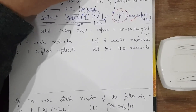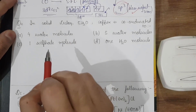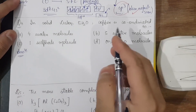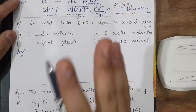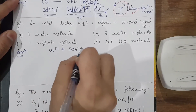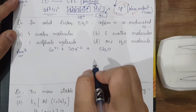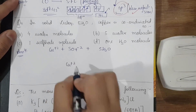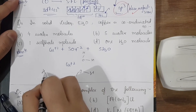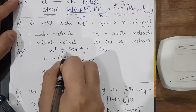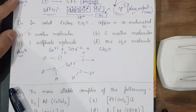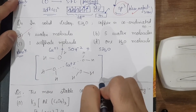The next question — one of my favorites, also asked in the UPSC exam — is: in solid CuSO₄·5H₂O, copper is coordinated to how many water molecules? This is directly mentioned in the NCERT. CuSO₄ gives Cu²⁺ and SO₄²⁻. The Cu²⁺ coordinates with four water molecules through the oxygen lone pairs.